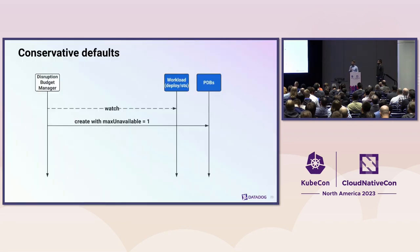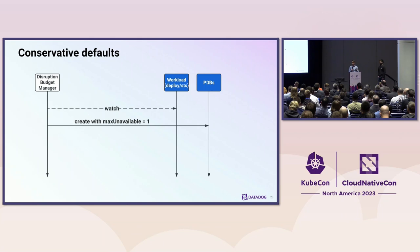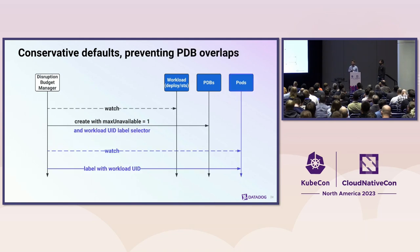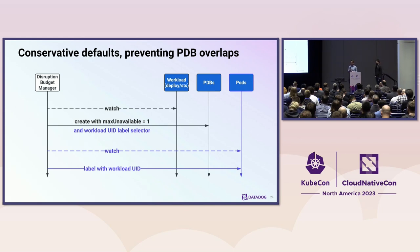For each workload, if a custom PDB is not provided, we create one with max unavailable equals 1. That is the safest default, and it's fast enough in most cases. PDBs select pods using label selectors, and we realized that using existing pod labels can lead to overlapping PDBs. When a pod matches two PDBs, the Kube API server doesn't know which one to use — it's a configuration error that denies the eviction. To avoid PDB overlaps, for our default PDBs we label pods with their deployment, stateful set, or any other controller's unique identifier, and select that label in the PDBs. Users can still create custom PDBs, and we monitor for overlaps so they don't block our node replacement campaigns.